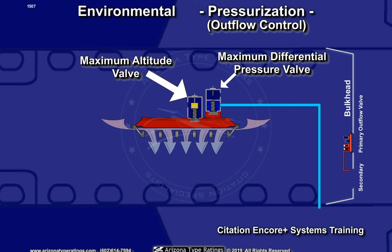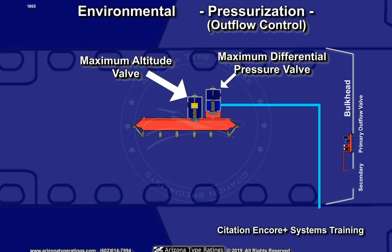The maximum cabin altitude limiter contains a sealed bellows which expands as the cabin climbs. Think of the sealed bellows as a bag of potato chips on the seat beside you in the cabin — as the airplane climbs, this bag of potato chips will expand, as the sealed bellows does. At a cabin pressure altitude of about 13,000 feet, the bellows expands adequately to open another orifice, venting cabin pressure into the control chamber. This causes the diaphragm to inflate, closing the outflow passage, preventing the cabin from climbing higher.